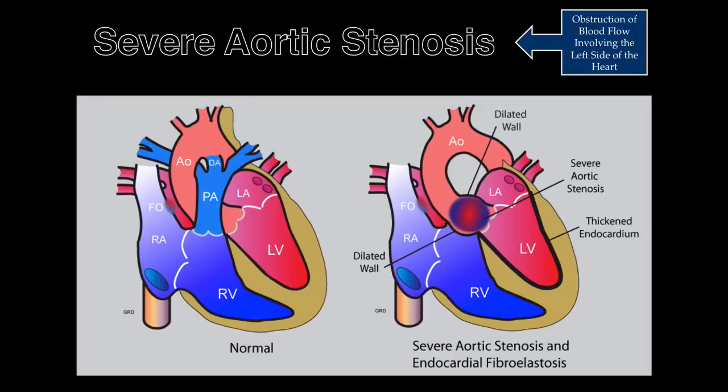Severe aortic stenosis occurs in 4 per 10,000 live births. Aortic stenosis can occur at the level of the valve, below the valve, or above the valve. Severe aortic stenosis may be associated with a normal, dilated, or small left ventricle.